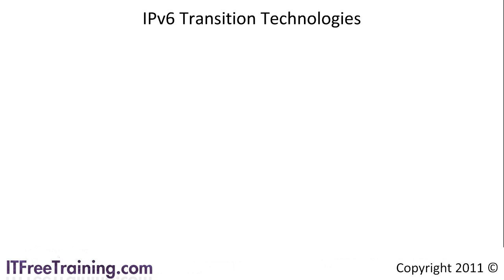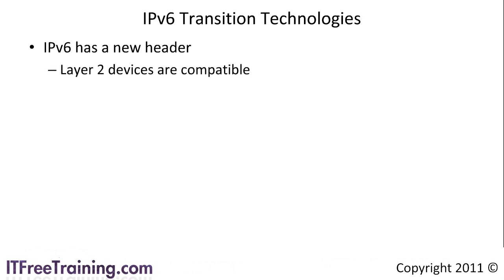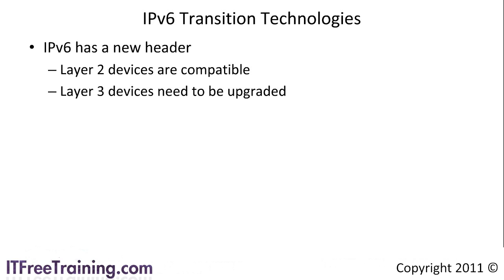There is still a lot of work that needs to be done before everyone has switched over to IP version 6. To assist the migration, some transition technologies have been developed. These are needed because IP version 6 has a different header than IP version 4. This does not affect layer 2 of the OSI model, as layer 2 devices will work with the new header. This means you can deploy your IP version 6 network without having to upgrade your hubs and switches. However, because the IP header has been changed, layer 3 devices need to be upgraded before they will work on an IP version 6 network. Many companies won't want to upgrade all their routers anytime soon, so transition technologies are needed.